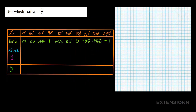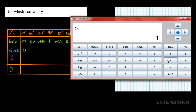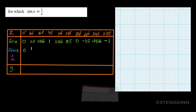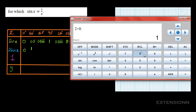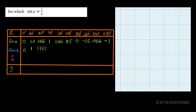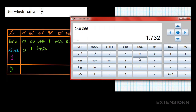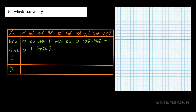Now we find 2 sin x by multiplying 2 times each sin x value. So we have: 2 × 0 = 0; 2 × 0.5 = 1; 2 × 0.866 = 1.732; 2 × 1 = 2; 2 × 0.866 = 1.732; 2 × 0.5 = 1.